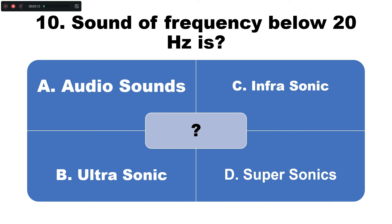Question number ten: Sound of frequency below 20 hertz is — option A: audio sounds, B: ultrasonic sound, C: infrasonic sound, D: supersonic sound. The correct answer is option C — sound of frequency below 20 hertz is known as infrasonic sound.